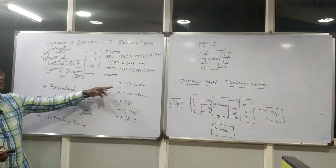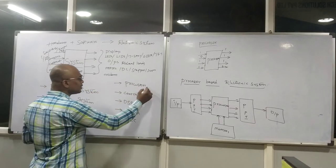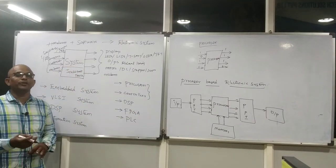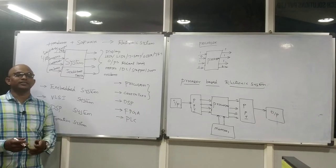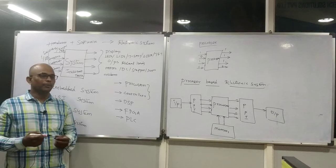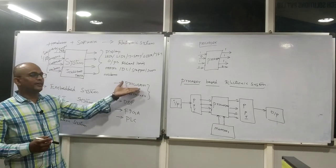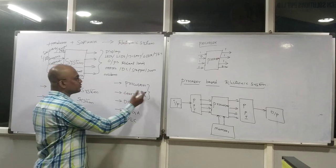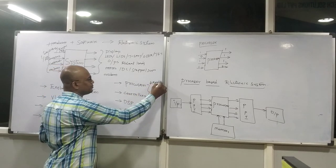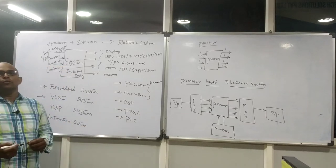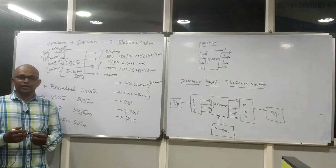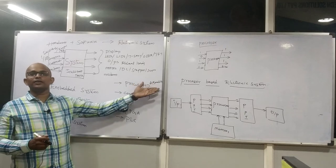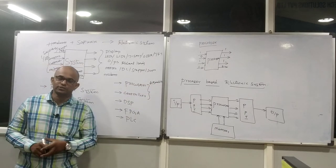In my system, you have processor or controllers as intelligent devices. For these intelligent devices, you need to talk in a specific language. I cannot communicate with the processor in any natural language — your processor doesn't understand Telugu, English, Urdu, or Tamil. It works with a specific language. In academics, you will cover the fundamental programming language for processors and controllers, which is assembly language — instructions like move, add, sub, and others. These are the different instructions you use for processors and controllers at the academic level.